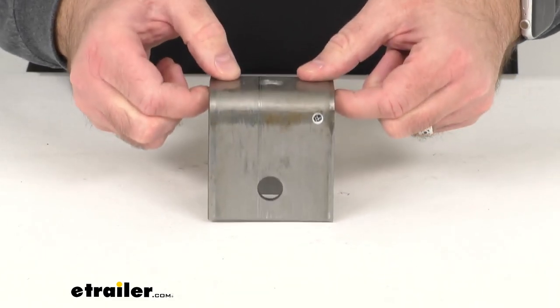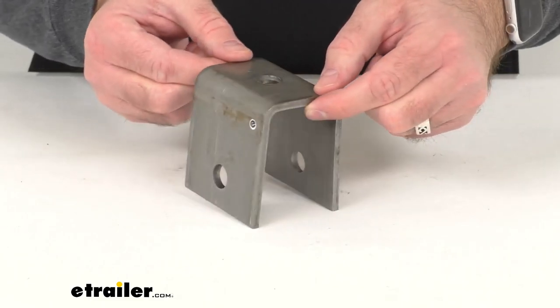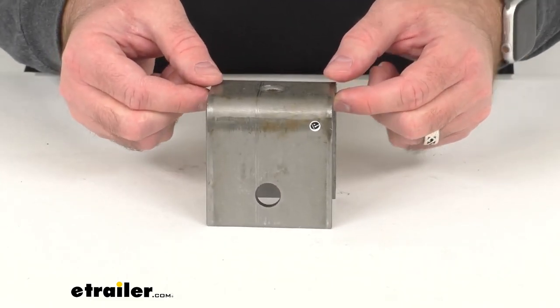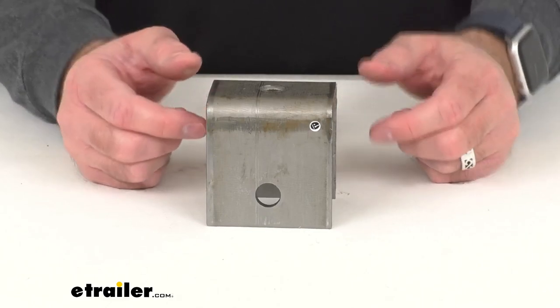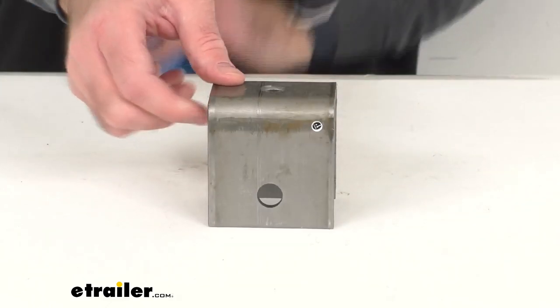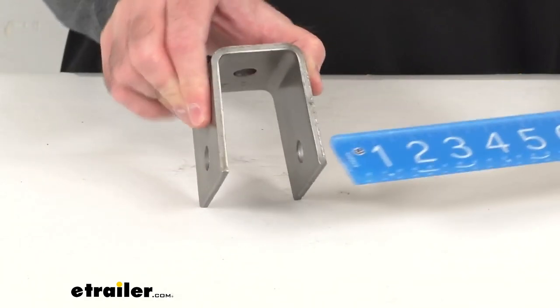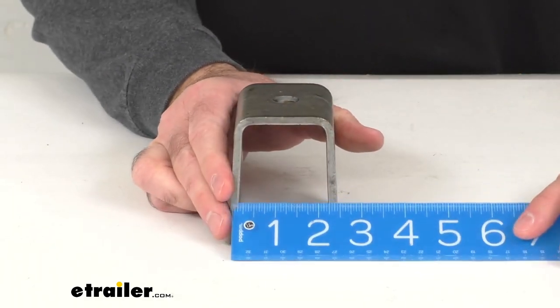Now this is going to fit your one and three quarter inch wide double eye springs with a nine sixteenths inch diameter eye. We can tell this by taking this measurement here, line this up here so you can see.